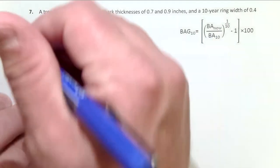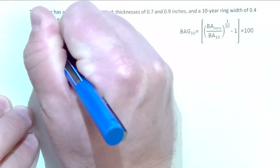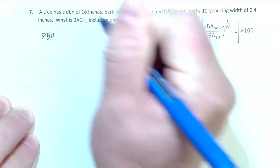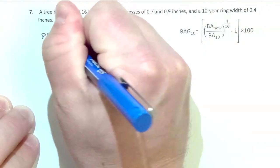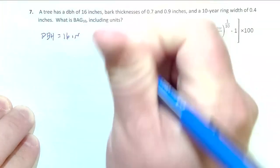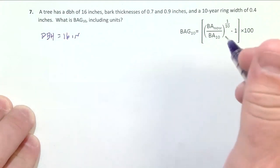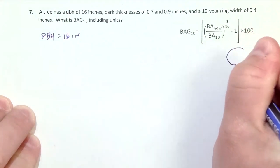The process is the same here. We take the DBH of the tree and that equals from our problem 16 inches. And then because we have our tree DBH on the outside,